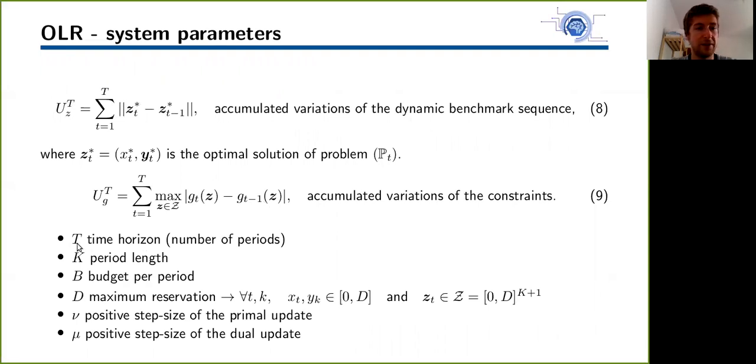Here we enumerate the different system parameters. T is the time horizon or the total number of periods on which we evaluate our solution. K is the period length or the number of slots per period. B is the budget allocated per period. D is the maximum reservation, so Xt and Yk must belong to [0,D]. This gives us the convex set [0,D] to the power k plus 1. Our reservation vector Zt equal to (Xt, Yt) must belong to Z. Mu and Mu bar are the positive step sizes of the primal and dual update respectively.